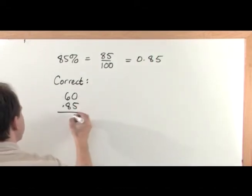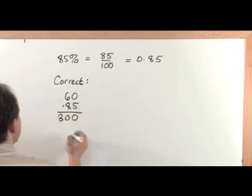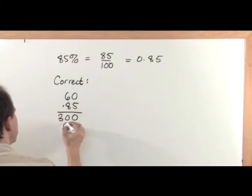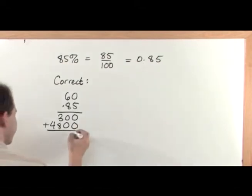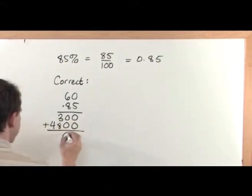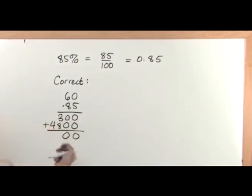Let's do it. 5 times 0 gives me 0. 5 times 6 is 30. I'm going to move along here so I have to put a 0. 8 times 0 gives me 0. 8 times 6 is 48. And I'm going to add these. 0 plus 0 is 0, 0 plus 0 is 0. 3 plus 8, starting at 8, 9, 10, 11. Got a 1, carry a 1. 4 plus 1 is 5.